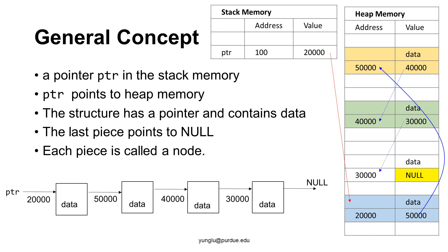The piece of memory at address 40,000 is a pointer storing the address 30,000, and this piece also contains data. Through this pointer we can reach address 30,000. At address 30,000, the pointer stores NULL. NULL is an invalid memory address used to indicate that no more data is stored after this piece of memory.